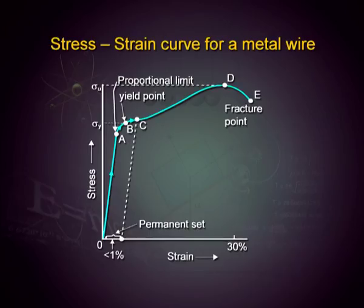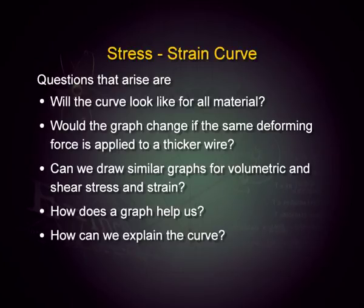Going further, you can make a graph — a graph of stress versus strain. What will this graph look like? This graph has a typical look. You can ask questions like: Will all stress-strain curves for all materials look the same? If I use a thicker wire, would my stress-strain curve still look the same? Or can we draw similar graphs for volumetric stress and strain, shear stress and strain? What does the graph tell us and how can we explain such curves?